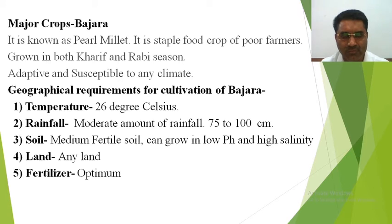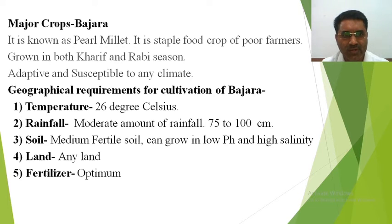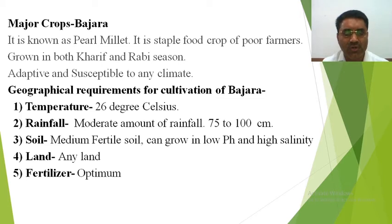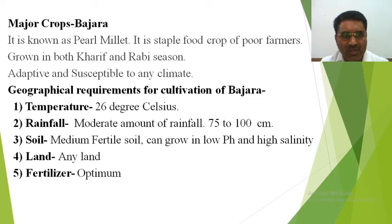Bajra is grown not only in the rainy season but also in winter, wherever irrigation facilities are available. The most important characteristic of this crop is that it is adaptive and susceptible to any climate — it can survive heavy rainfall as well as a break in the monsoon. It can adapt to severe or harsh climatic conditions.